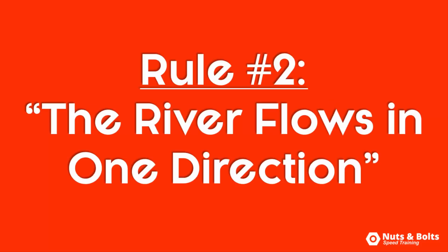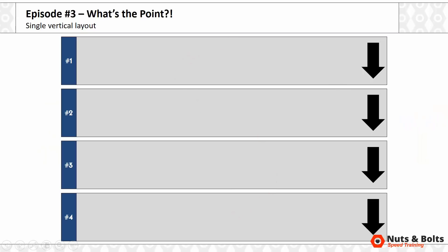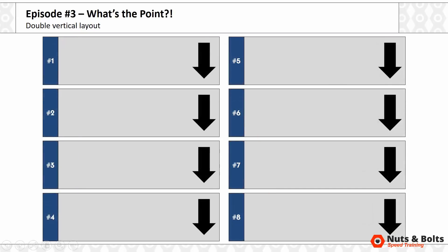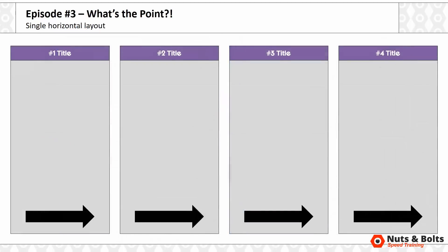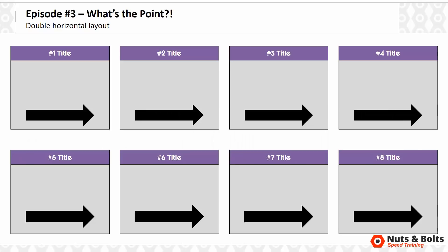That brings up rule number two: the river flows in one direction, and so do people's eyes. Once you have your process broken up into relevant chunks using the chunky monkey rule, it's best to have everything flowing in a single direction — like a river. That could be vertically down your slide, top to bottom, and if it's really complicated you could break it into two columns. You could also go horizontally across your slide, and again if it's complicated, break it into two horizontal rows.